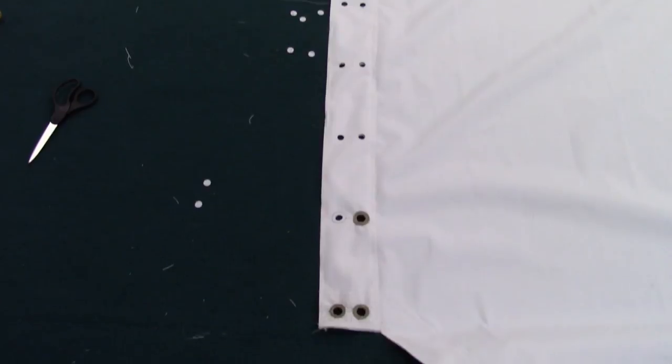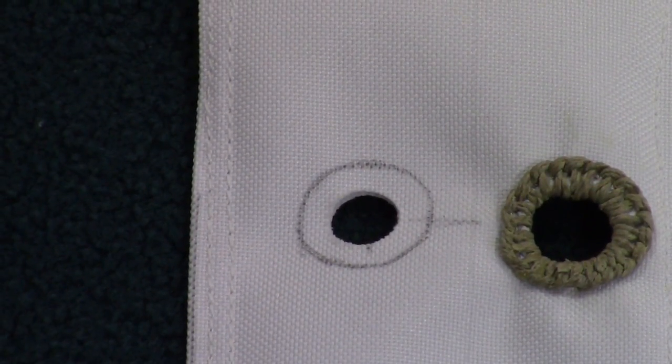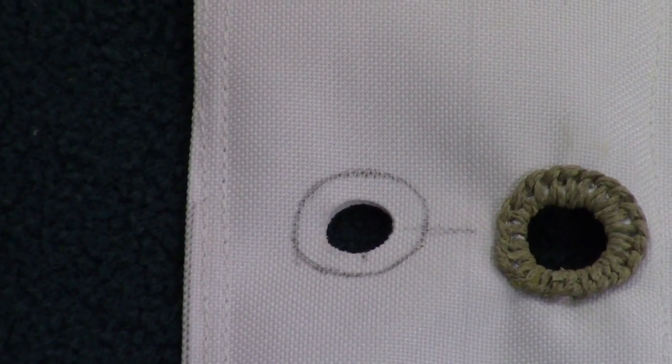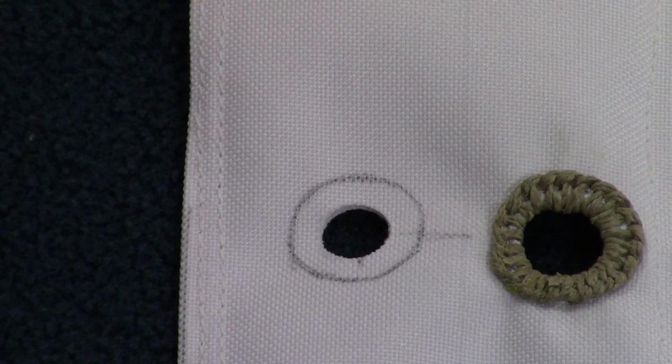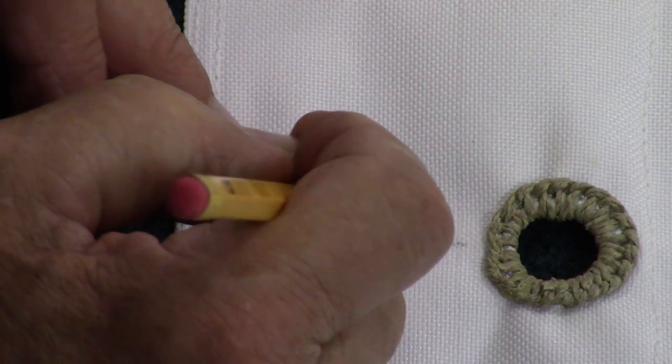First thing you have to do is punch the holes for the grommets. Here I'm using a half-inch hole, and the next thing that I do is draw a circle as guidelines around the grommet hole.